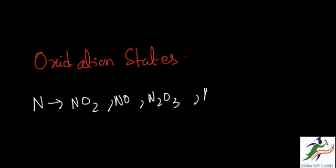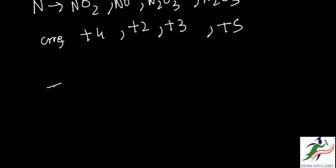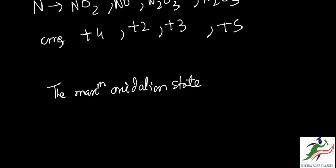Now for Nitrogen's oxidation state in Nitrogen Dioxide, Nitrous Oxide, N2O3, and N2O5 are respectively plus 4, plus 2, plus 3, and plus 5. The maximum Oxidation State of D-Block Elements...